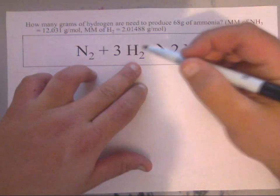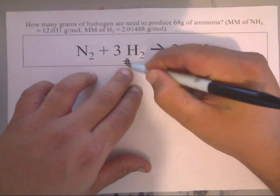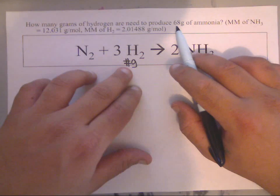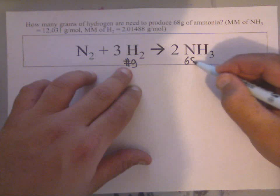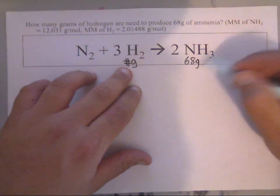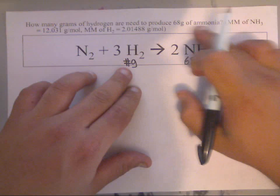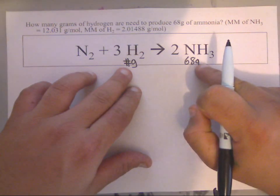It says hydrogen is needed to produce 68 grams of ammonia. Now this is ammonia right here, and they have given us that information at 68 grams of ammonia. Notice that I've put in the 68 grams of ammonia underneath the 2NH3.